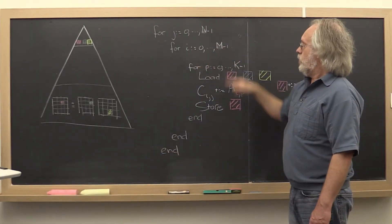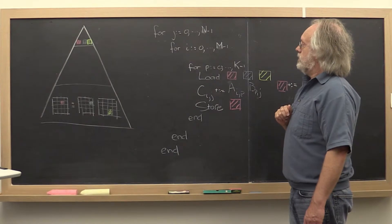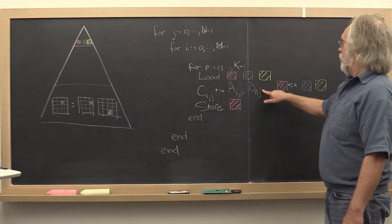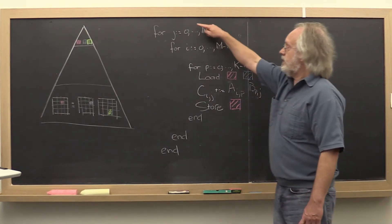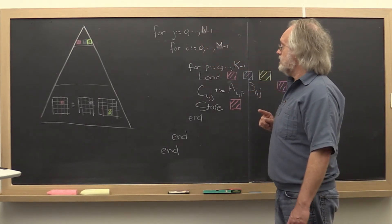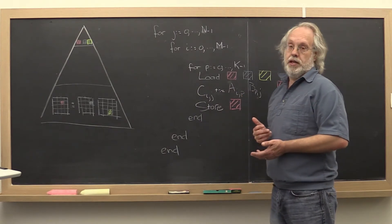So over here we have the whole algorithm. The operation that we perform is this update with three blocks. But then we need to have some triple nested loop around that in order to do all of the multiplications with the submatrices.